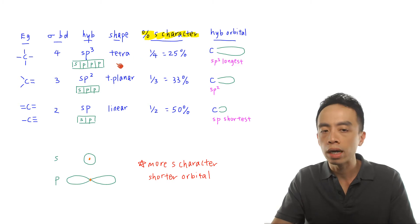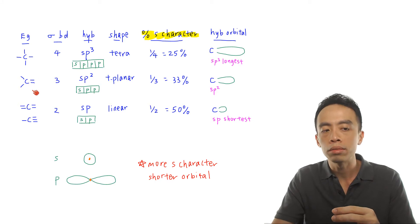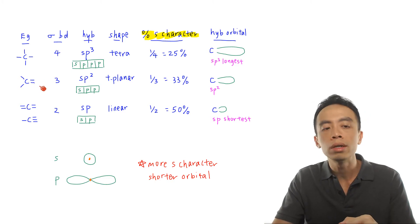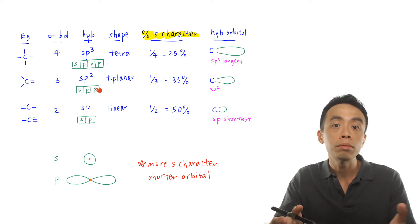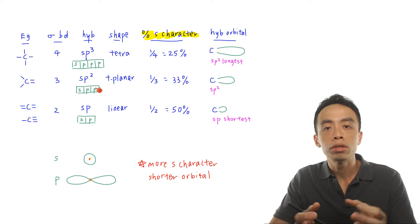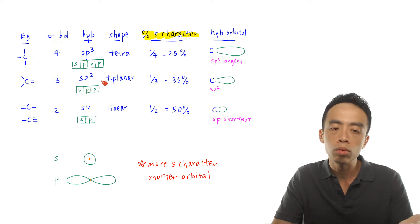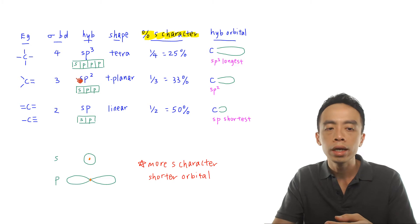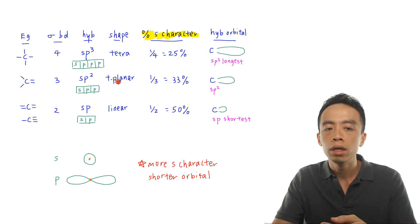In the second scenario, carbon will have three sigma bonds and one pi bond. Remember, a double bond is one sigma plus one pi bond. So the number of sigma bonds that carbon is forming is three, and therefore the state of hybridization will be sp2. Carbon will mix three orbitals — the 2s, 2px, and 2py orbitals — to get three hybridized sp2 orbitals. The shape with respect to carbon in this case will be trigonal planar.